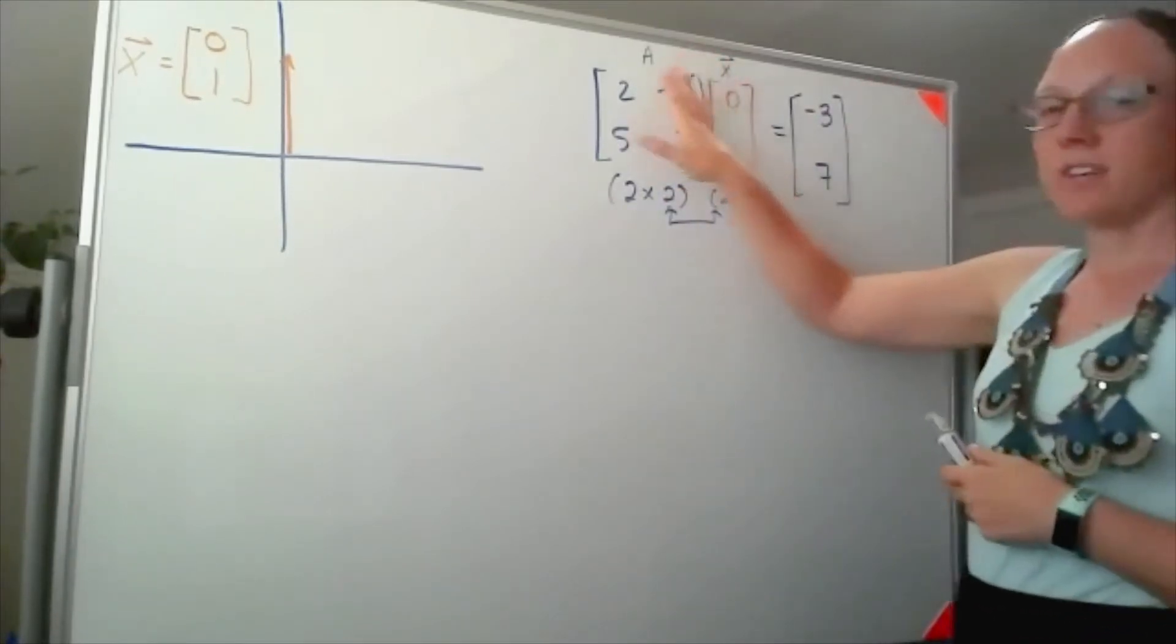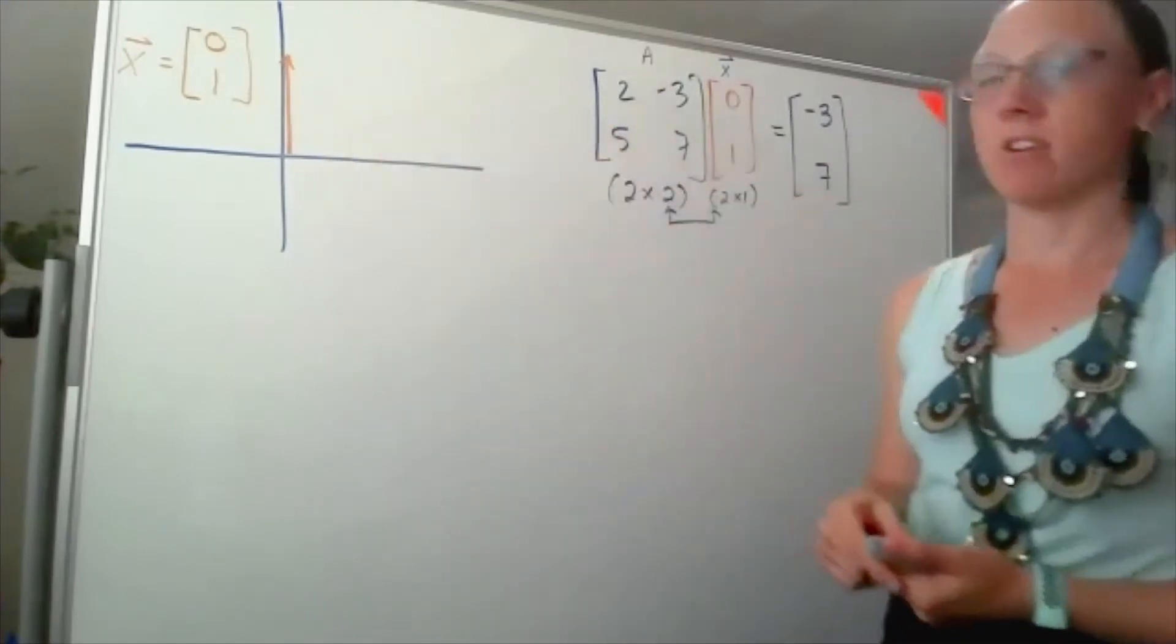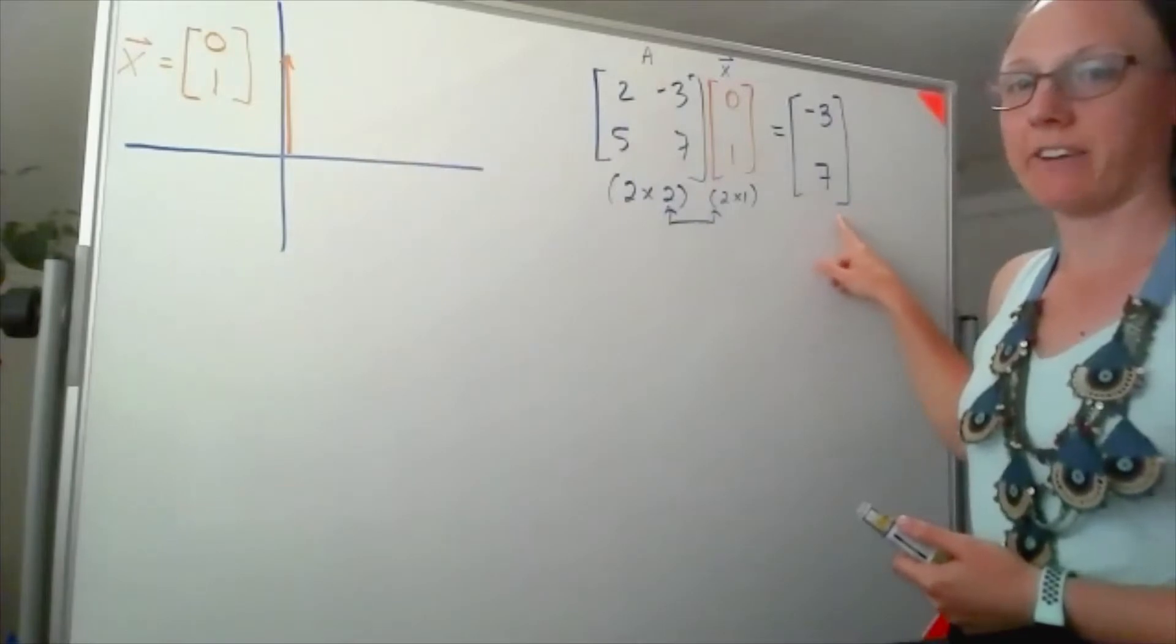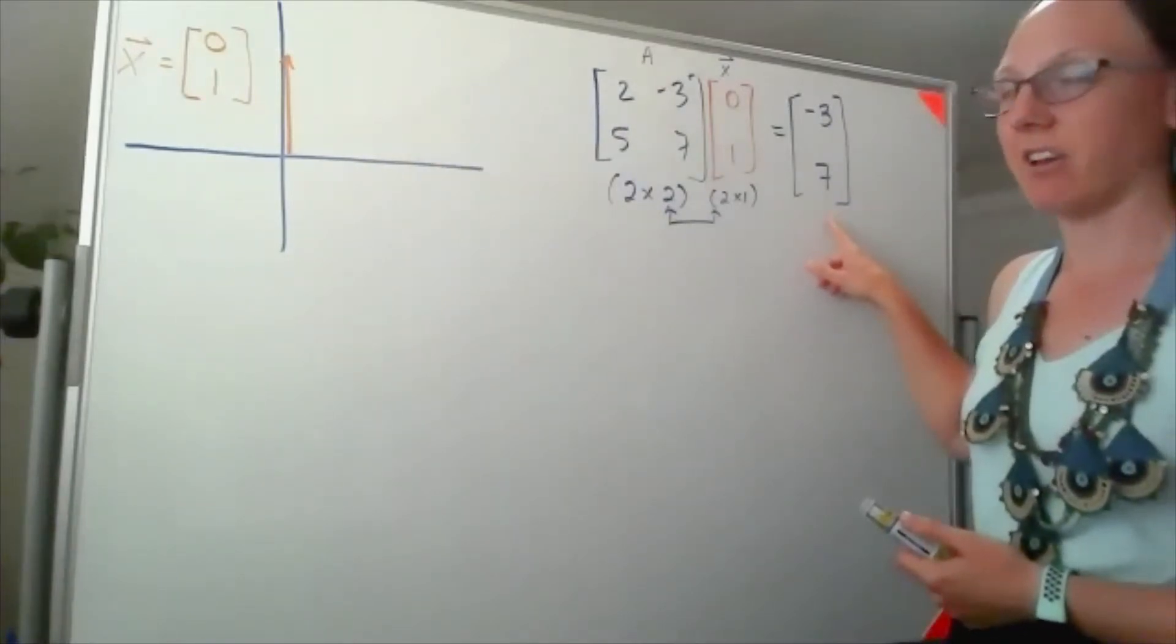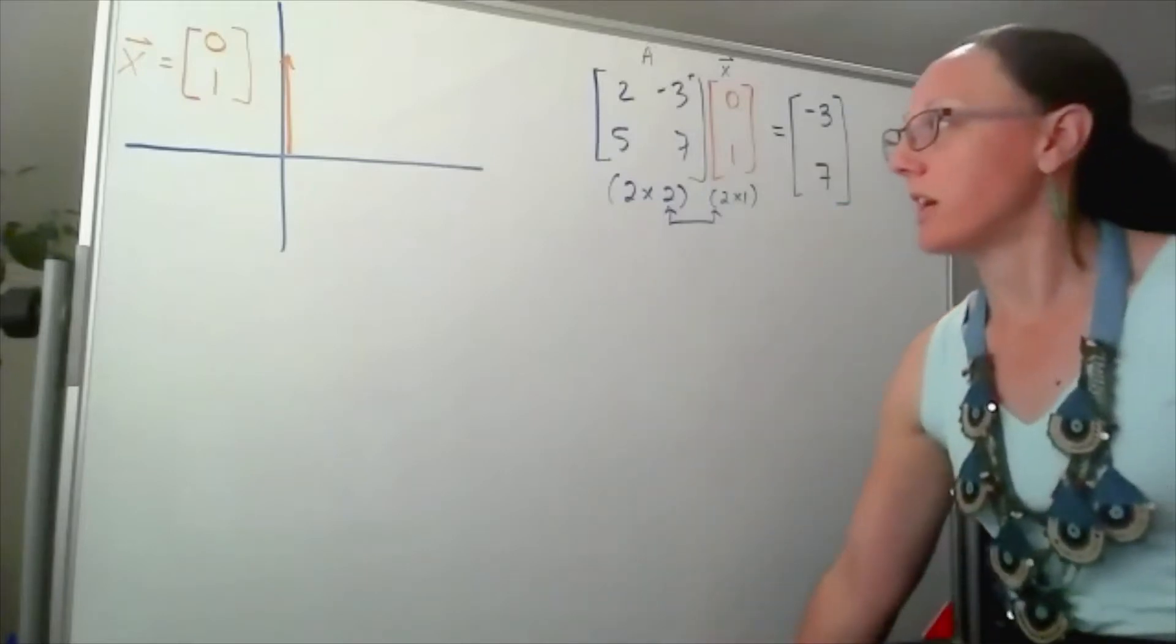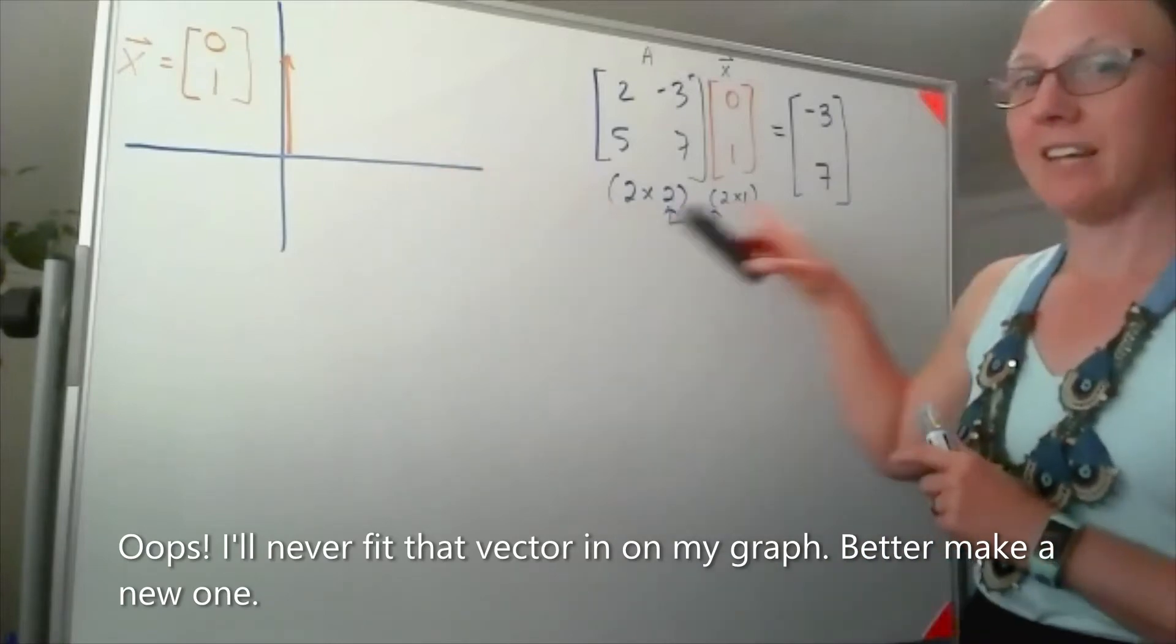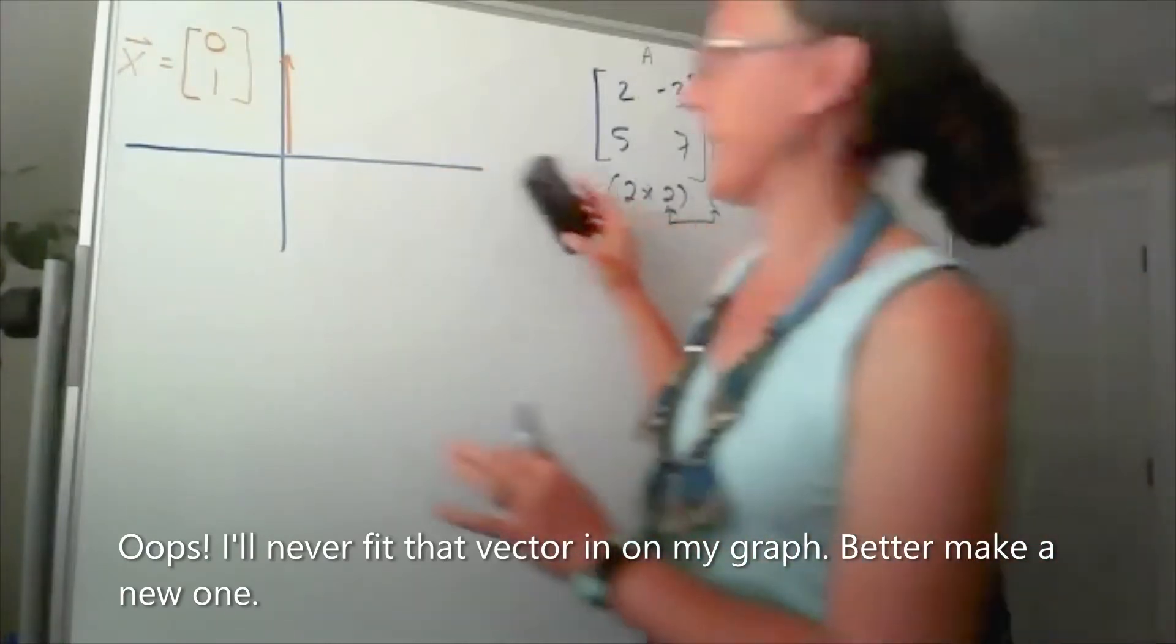So this matrix transforms the vector 0, 1 into the vector negative 3, 7. So if I were graphing this negative 3, 7, I really did not leave myself enough space over here. Didn't realize how big my numbers were going to get.